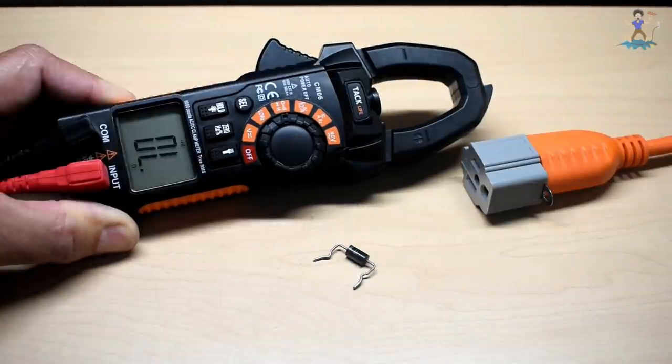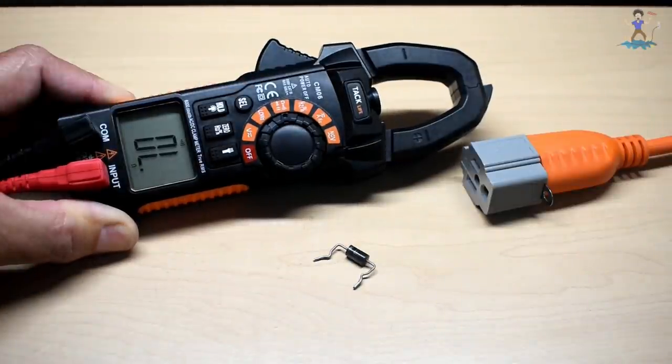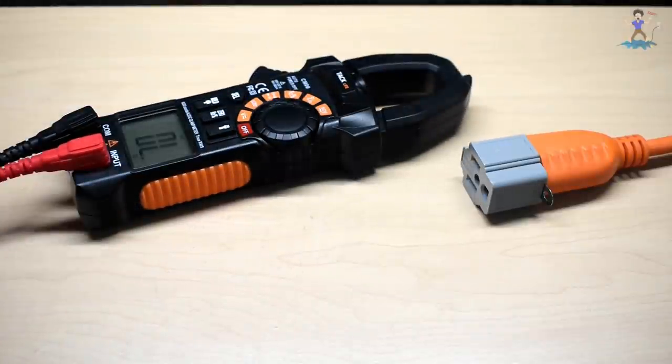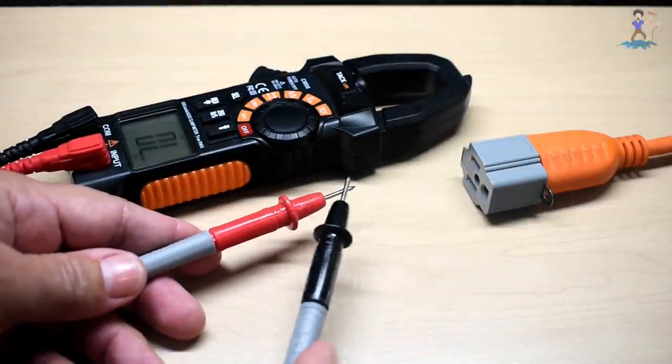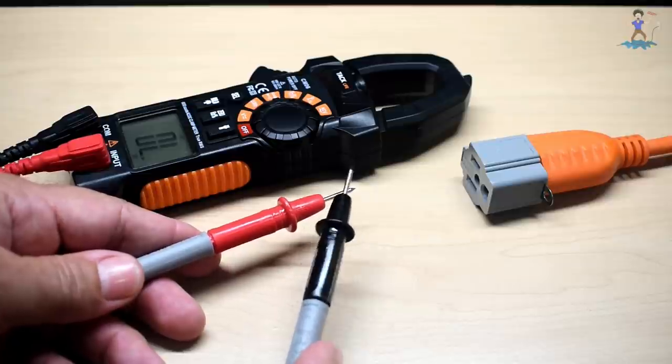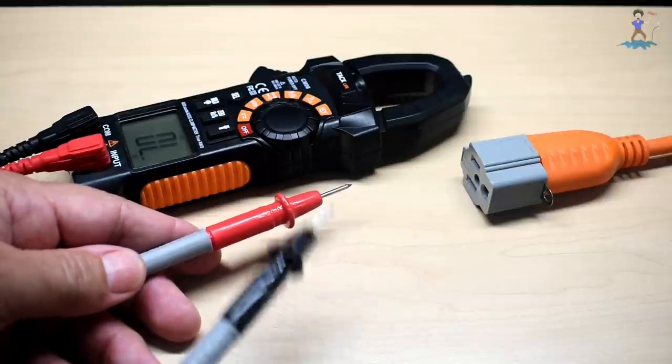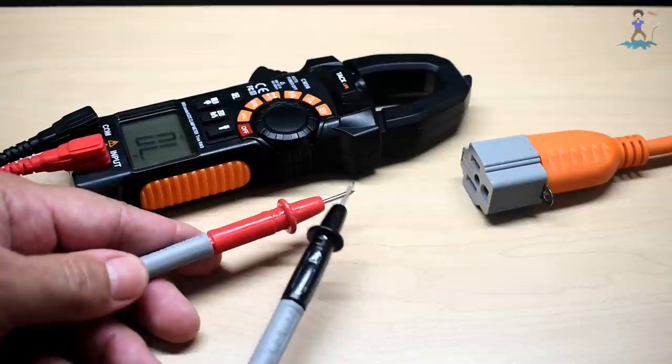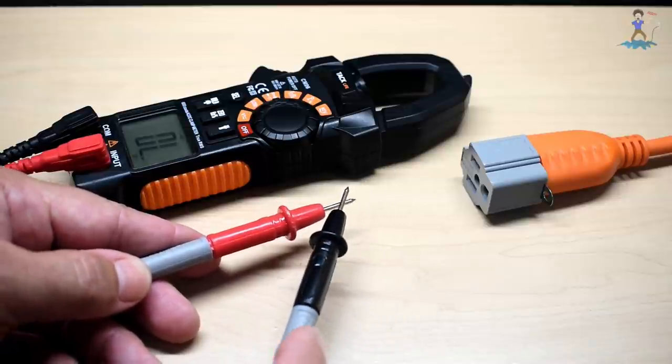Next setting continuity, when you touch the probe tips together the alarm will sound and it's pretty instantaneous. No delay. The one thing about my Mustool there is a slight delay when you touch the tips together, this one is fast.